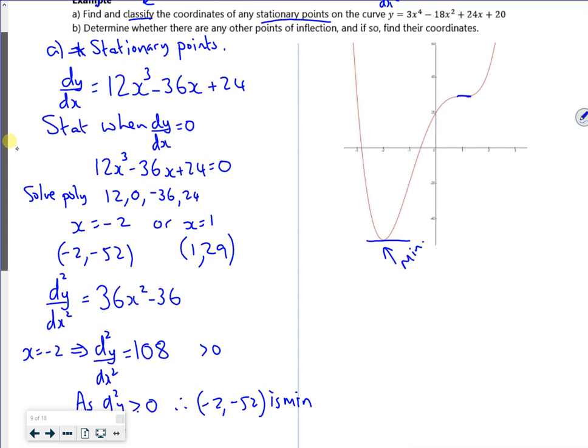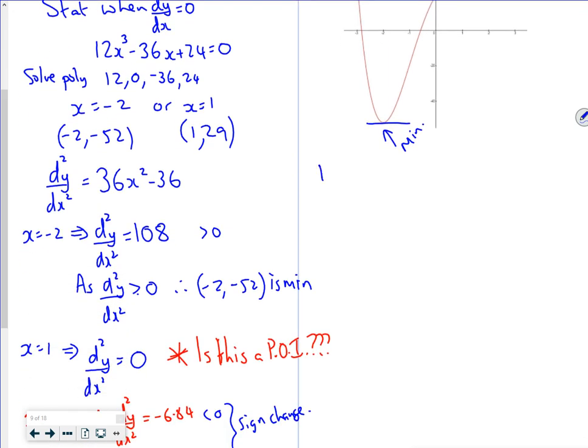Part B says to find any other points of inflection. We set d²y/dx² = 0, so 36x² - 36 = 0. Dividing by 36 gives x² = 1, so x = ±1. I know x = 1 is my stationary point of inflection.